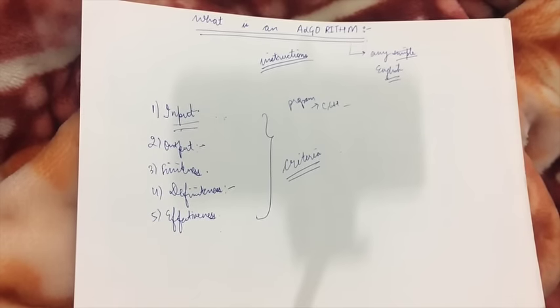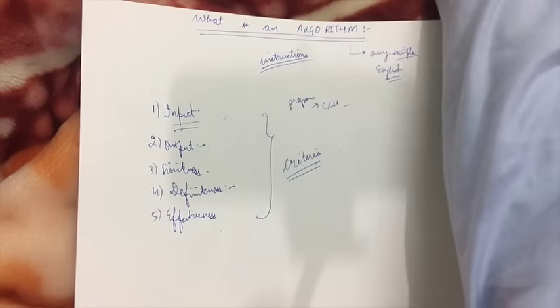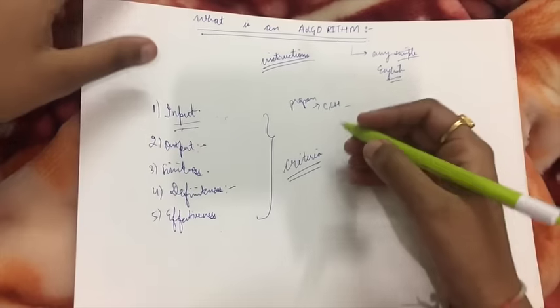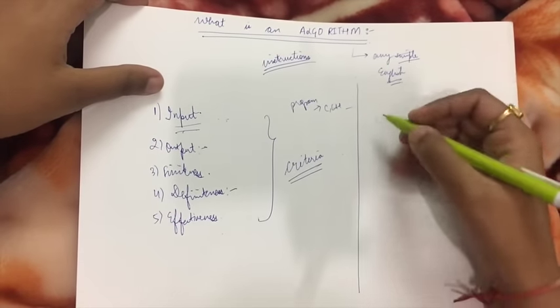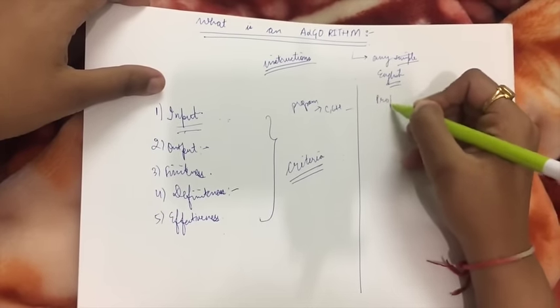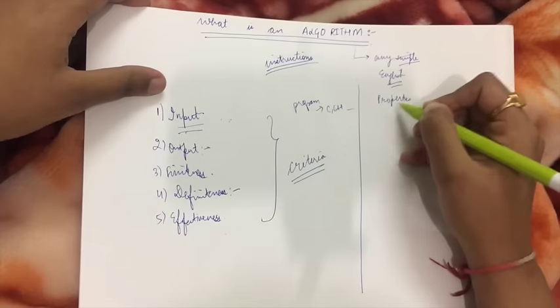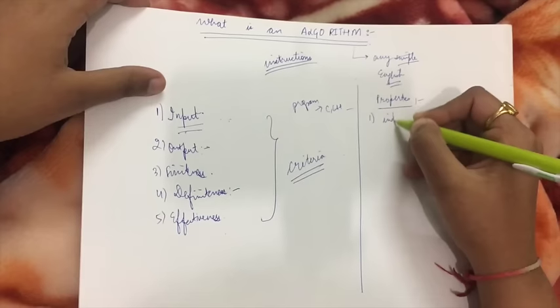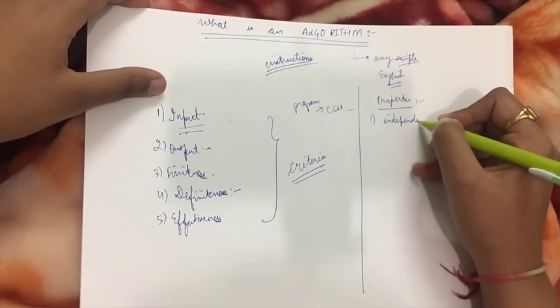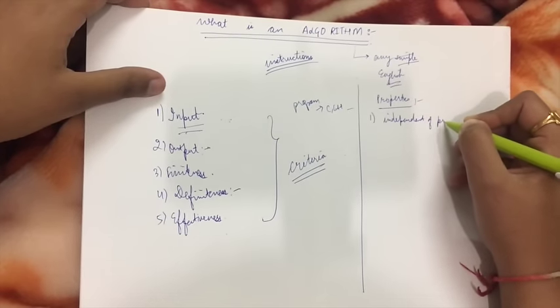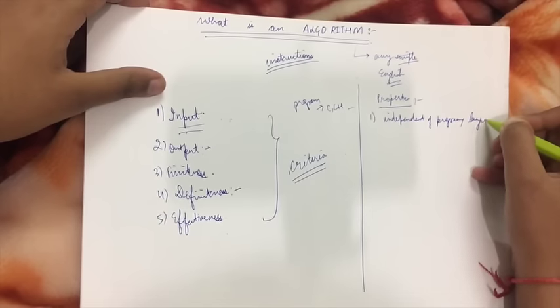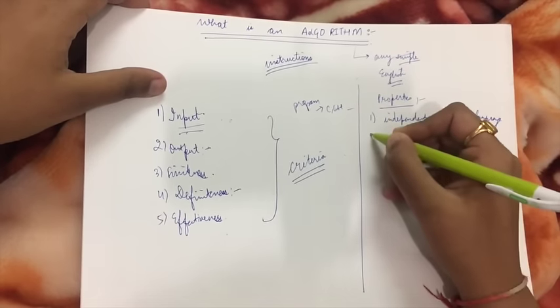Next, we are going to study the properties of an algorithm. The first and foremost property is that they are independent of the programming language. This is the first property of an algorithm.